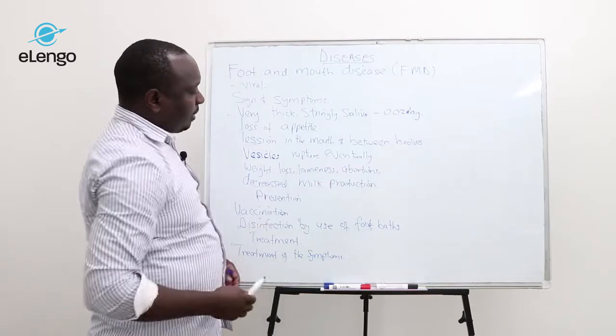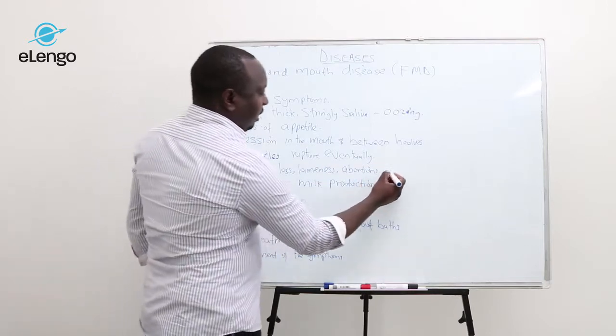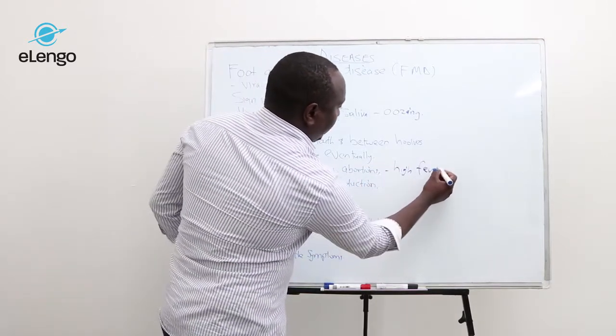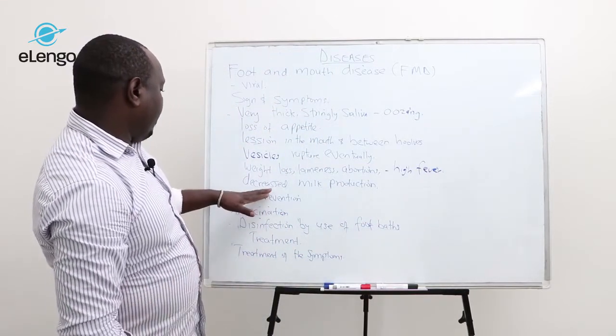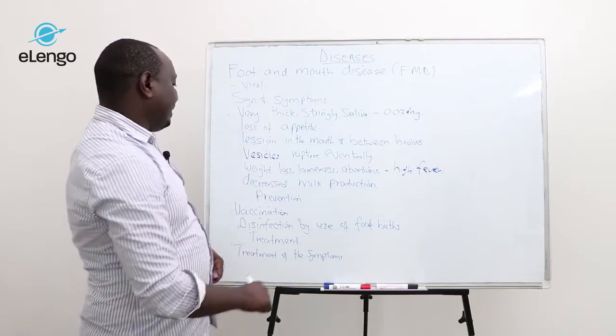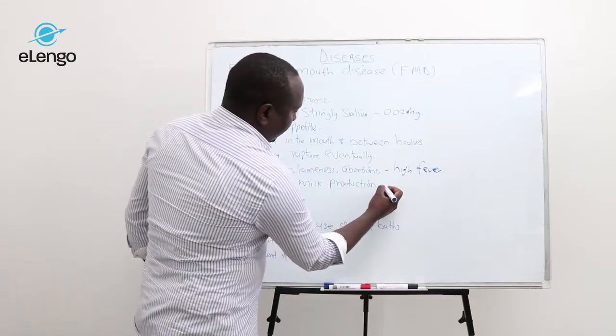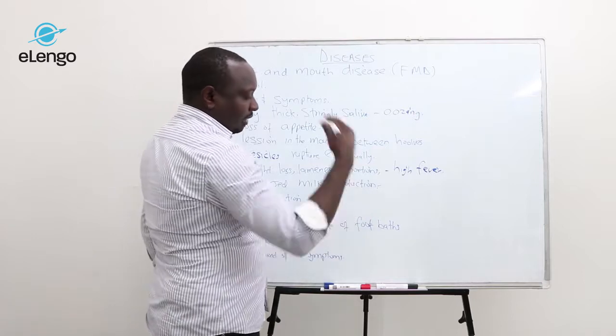Abortions occur because there is always high fever, so the animal aborts if pregnant. There's also a very abrupt decrease in milk production.